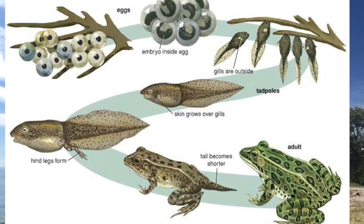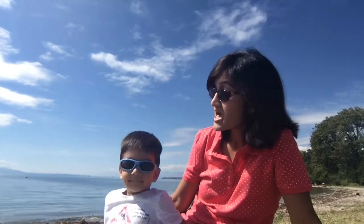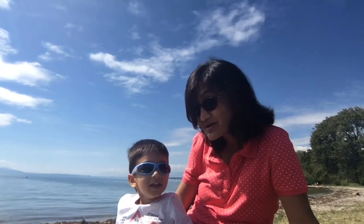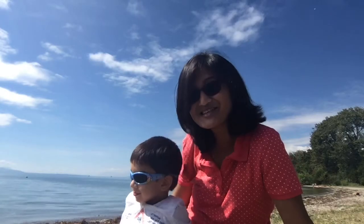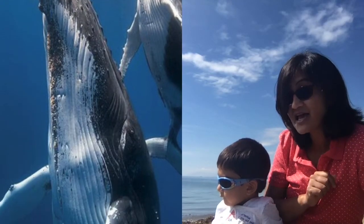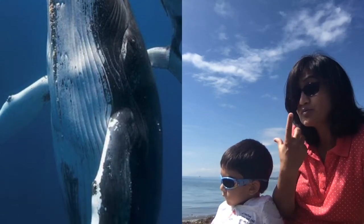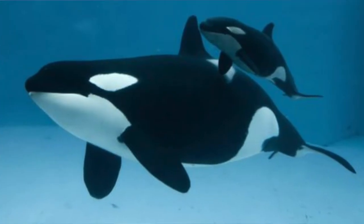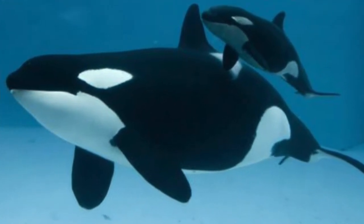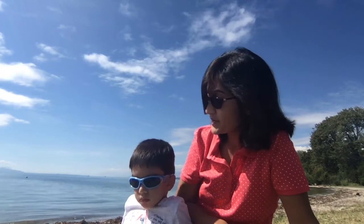When frogs grow older, they develop lungs and can breathe air, so they are amphibians who can live in water as well as on land. How about whales? Whales give birth to little whales because a whale is a mammal — it can breathe air, it has lungs, and it comes to the surface of the water to breathe.